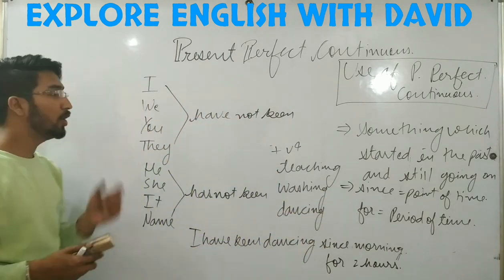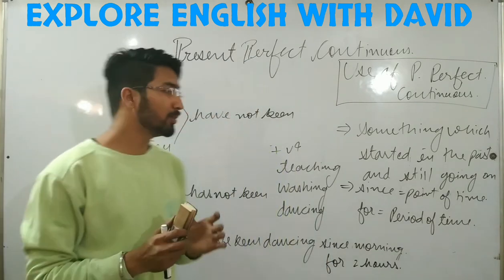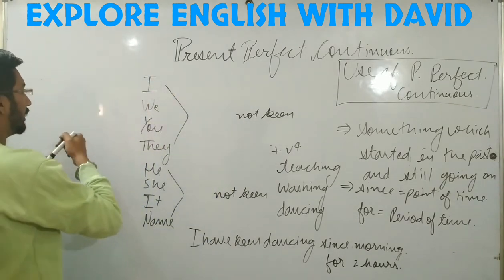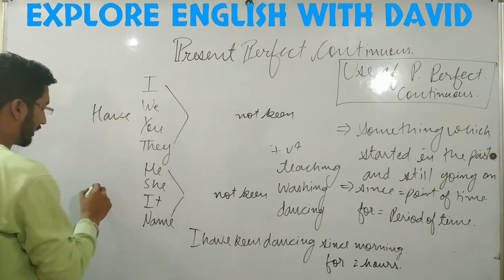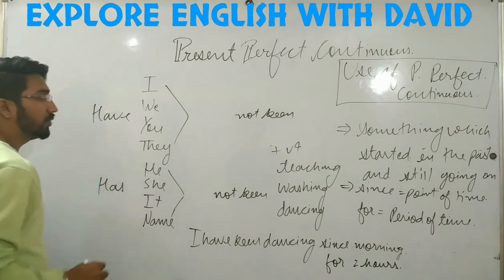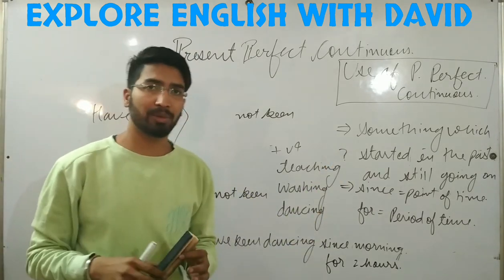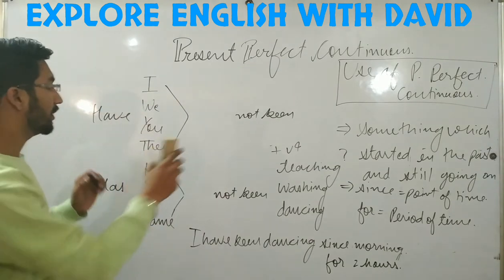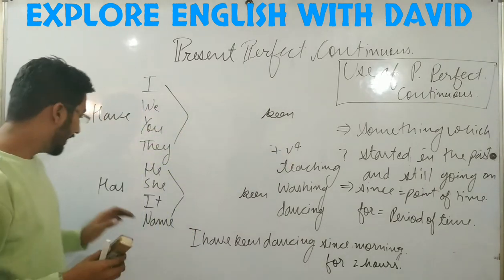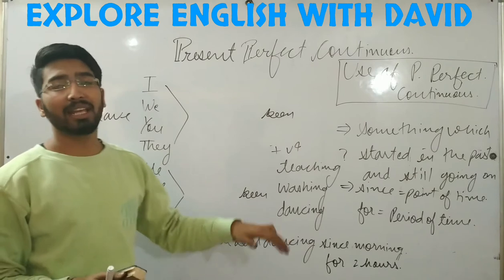Now let's understand how we can make interrogative sentences. You just need to move the helping verb before the subject. So 'have' or 'has' comes first, then the subject. For example: Have I been teaching since morning? Has she been reading since morning? Have they been playing for two hours? Has Kamal been complaining against him since childhood?